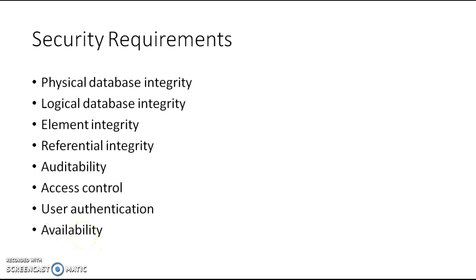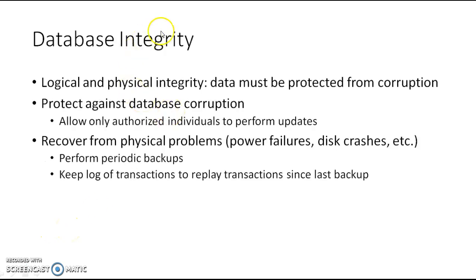Availability means that if your database is not available to users 24/7, there is a security problem. If the database has been hacked, stopped, or there is a man-in-the-middle attack, it will not be available. Availability is the most important attribute for security. As discussed in the initial chapter, the CIA triad stands for Confidentiality, Integrity, and Availability - and availability is a most important factor.